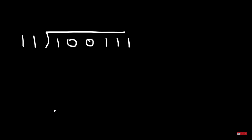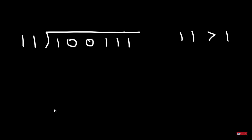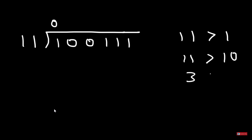We have binary divisor one one on the outside, and dividend one zero zero one one one one on the inside. The quotient digits can only be zero or one. We compare: one one is three, which is greater than one, so one one does not go into one — zero times. Next, looking at one zero: one one is three, one zero is two, three goes into two zero times.